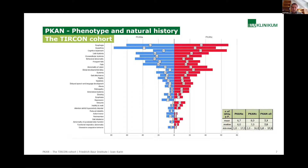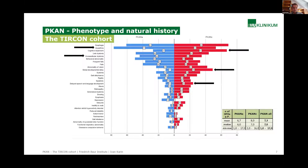This slide shows the most frequent symptoms in PKAN distributed by atypical (blue) and classic (red) phenotype. Notably, cognitive impairment, global developmental delay, and delayed speech and language development are way more prominent in the classic phenotype. On the other hand, dysarthria, mandibular dystonia, and behavioral abnormalities seem more prominent in the atypical phenotype. Other motor functional impairments are quite equally distributed.